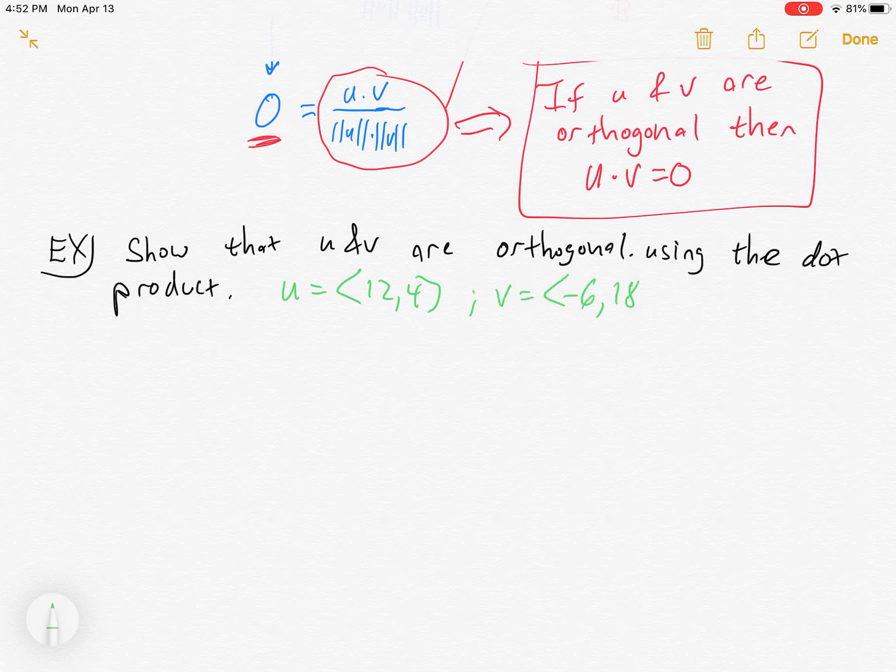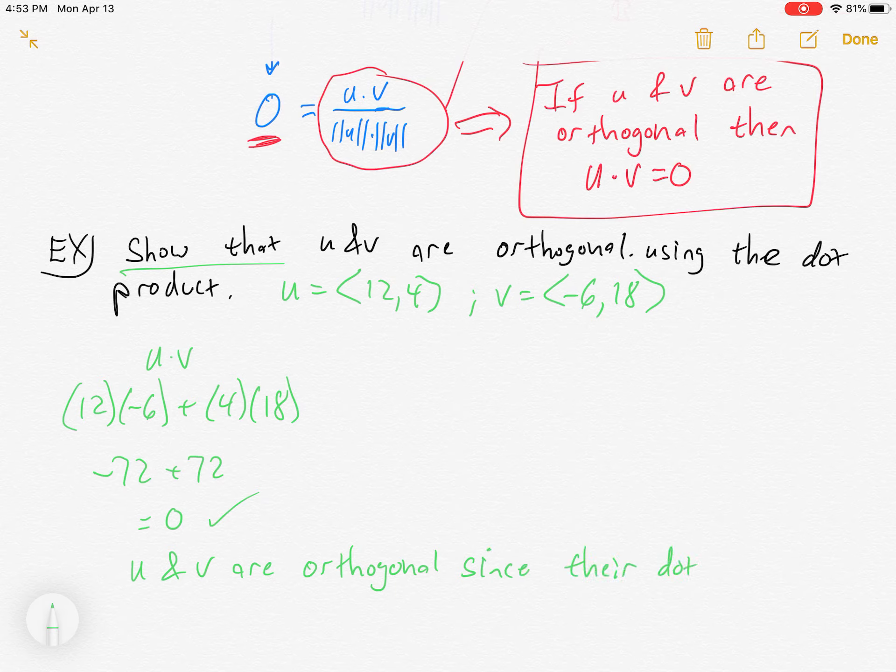Okay, so we could say, let's say u is 12, 4, v is negative 6, 18. Maybe you can tell just by looking at it. We'll talk about how we might be able to tell that. But notice by saying show that, I know it's true. So I'll just take the dot product of them. And I get negative 72 plus 72 equals zero. Check. There we go. So we could say, u and v are orthogonal since their dot product is zero. Or I guess I could have just said since u dot v equals zero.